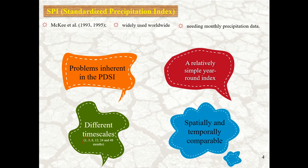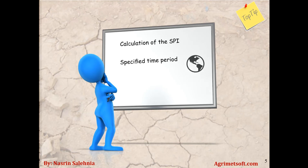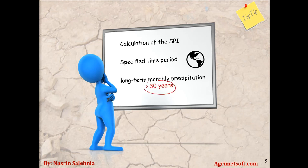Another important thing is that SPI is supposed to be spatially and temporally comparable — that is really important. Calculation of the SPI for a specific time period for any location requires long-term monthly precipitation data for at least 30 years. So it is really important to know this, because if you have input precipitation data less than 30 years, then you cannot achieve more precise and exact SPI outcomes.